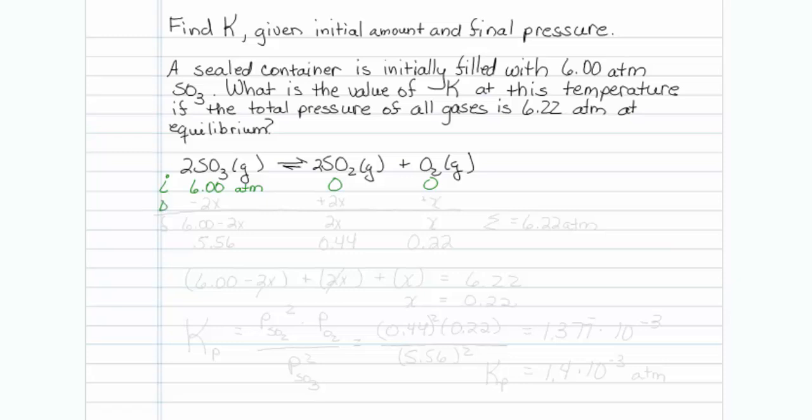So initially before the reaction started we have 6.00 atmospheres and no product. The delta rho is what I'm going to figure out and when I'm done I know that this sum of the pressure of the gases has to equal 6.22 atmospheres.